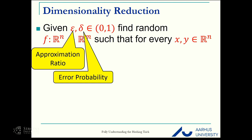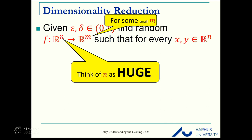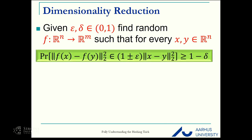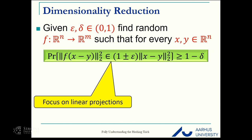One trick is to reduce the dimension. What do I mean by dimensionality reduction? Given some epsilon and delta, where epsilon is the approximation ratio and delta is the error probability, we want a function, a random function, from R^n to R^m, such that for every x and y, the L2 distance is approximately preserved.